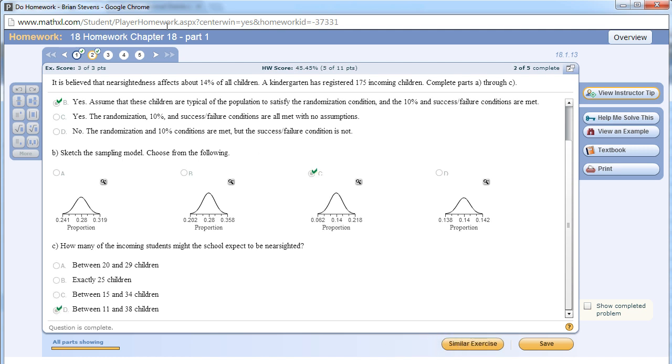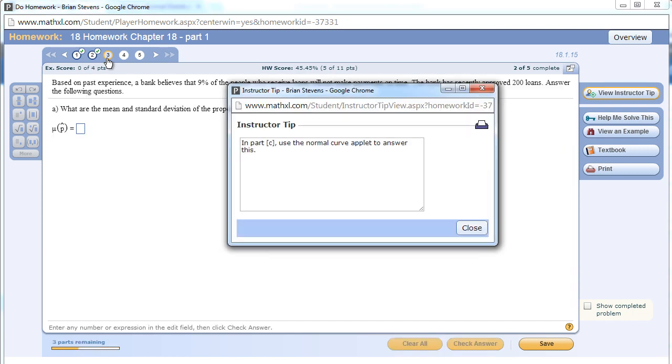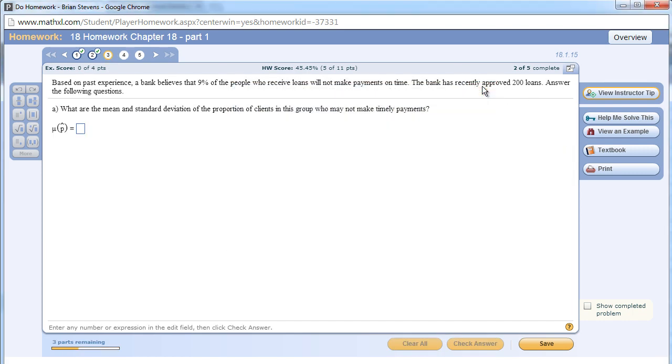With this problem we need to make the sampling distribution again. Remember, this is with proportions and we're looking at the sampling distribution when we know the sample size and the true proportion. We know the true proportions in these problems. This is p, not p-hat. If they believe that 9% of people will not make loan payments on time, the center of the sampling distribution, the mean of it, will be 0.09.